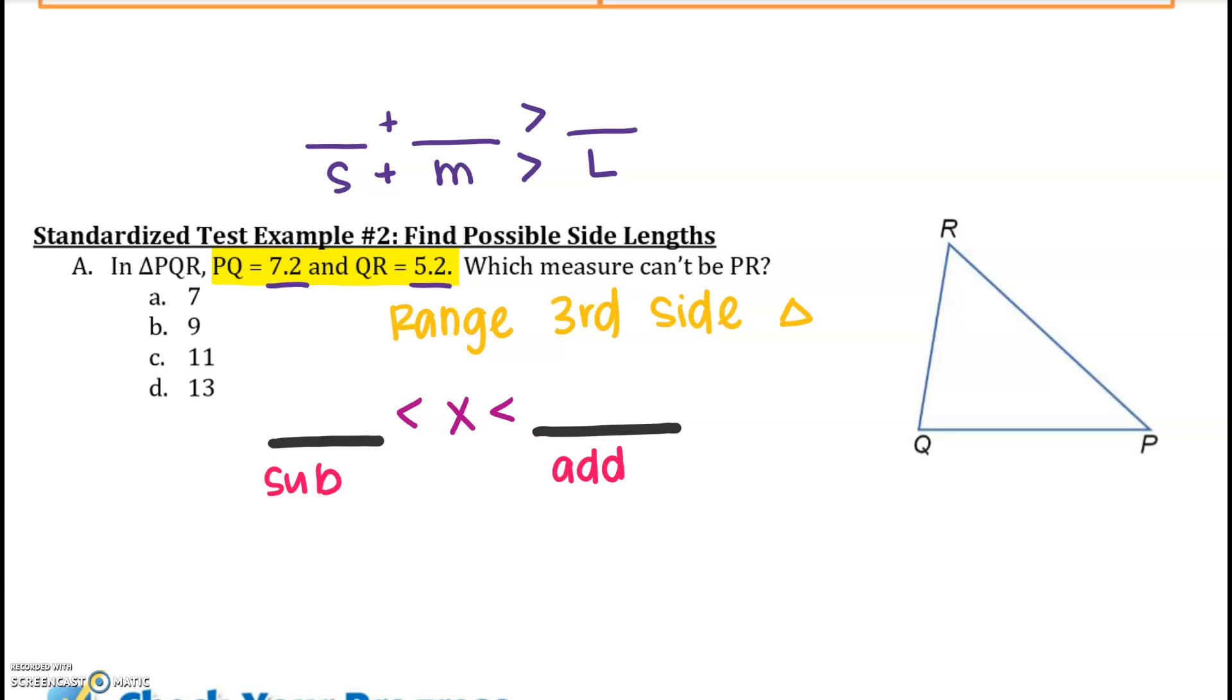If I add the two together, 7.2 plus 5.2 is going to give me 12.4. And then if I subtract the two, 7.2 minus 5.2, and you wouldn't do it in reverse because a side cannot be negative, so I'm going to say 2. So what does that even mean? What is this statement right here telling me?